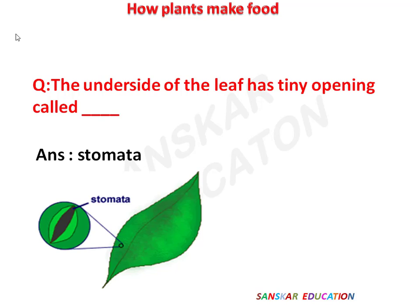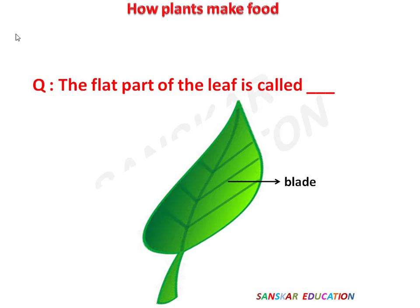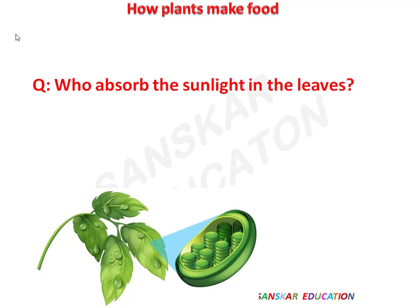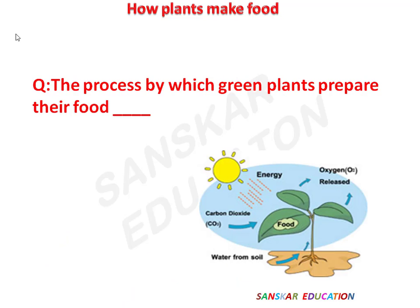The flat part of the leaf is called — answer is: blade. Who absorbs sunlight in the leaves? Answer is: chlorophyll. The process by which green plants prepare their food is known as — answer is: photosynthesis.